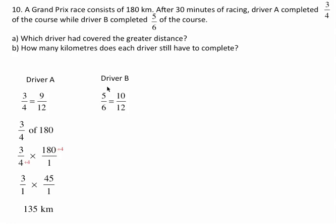Driver B has gone five-sixths of the 180, so that means five-sixths times 180 over one. The six and the 180 are going to cross-reduce, so I'm going to divide them both by six, and that gives me five-over-one times thirty-over-one, and five times thirty is 150 kilometers.